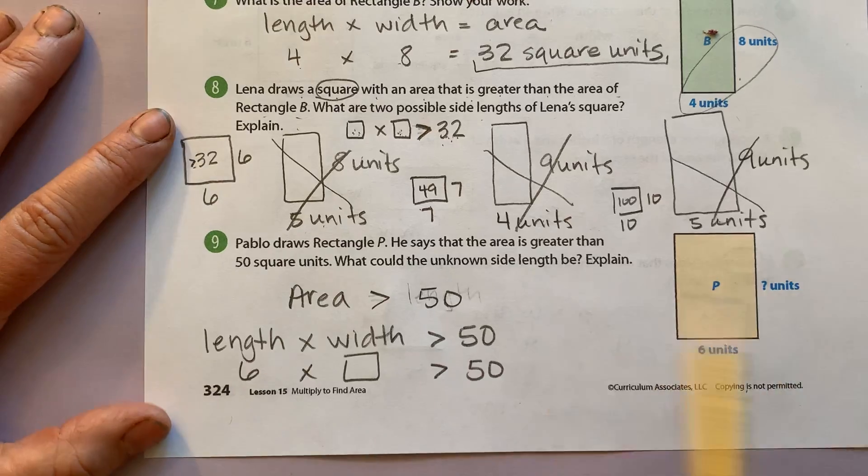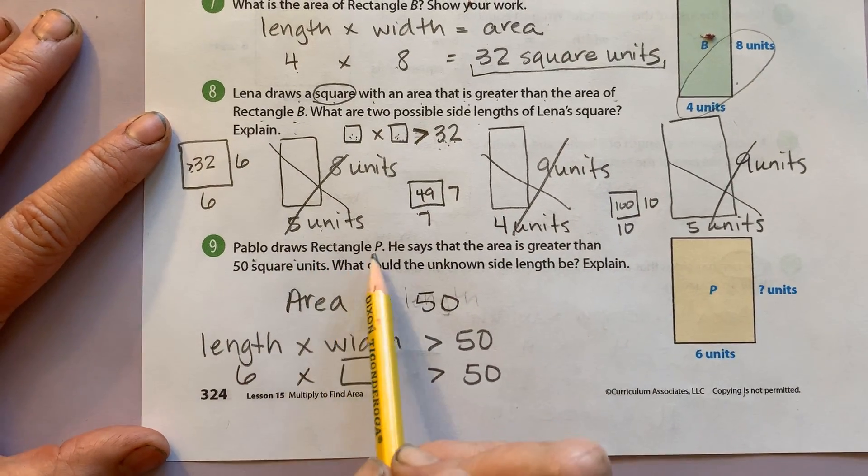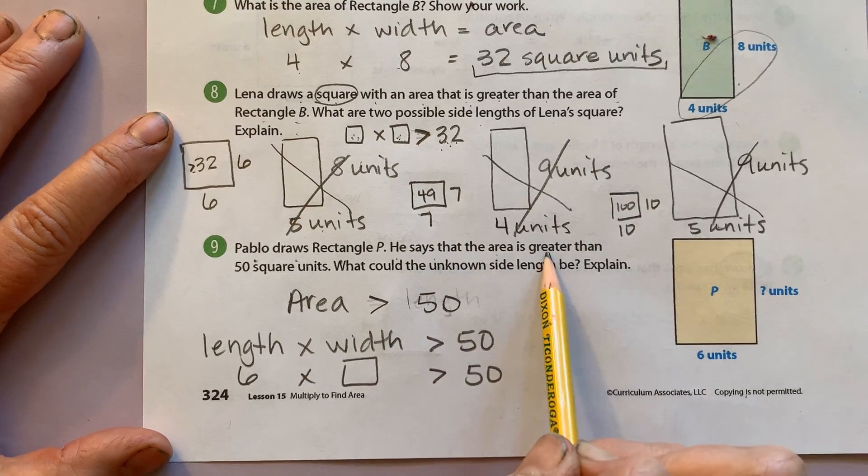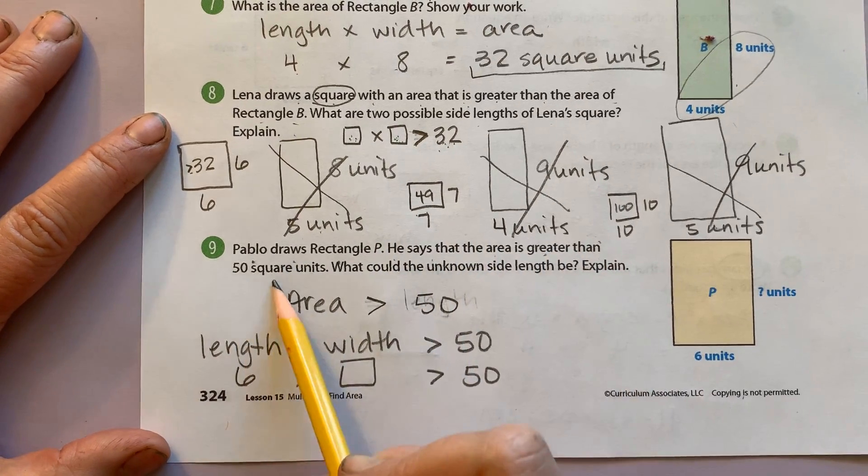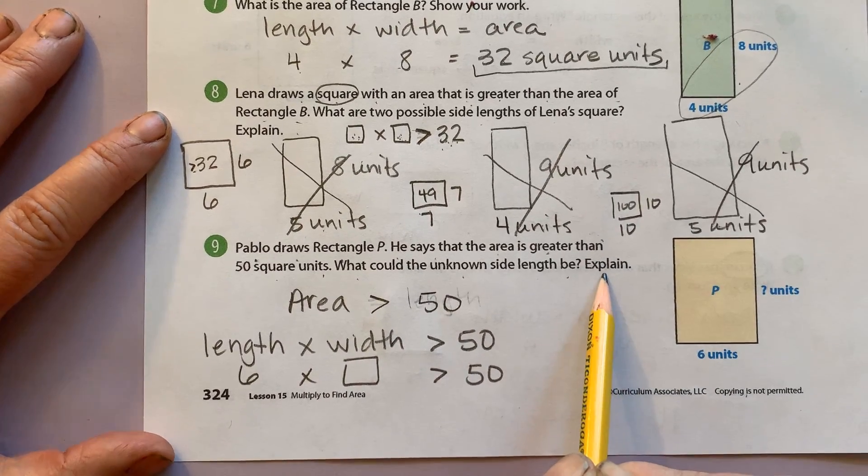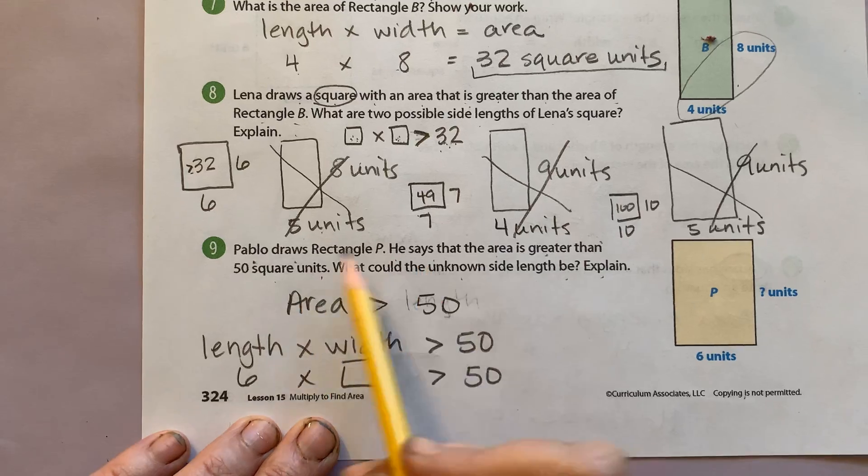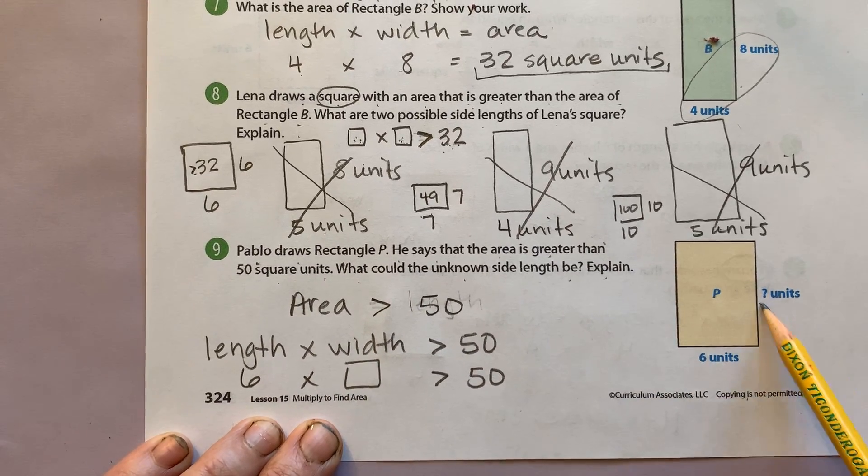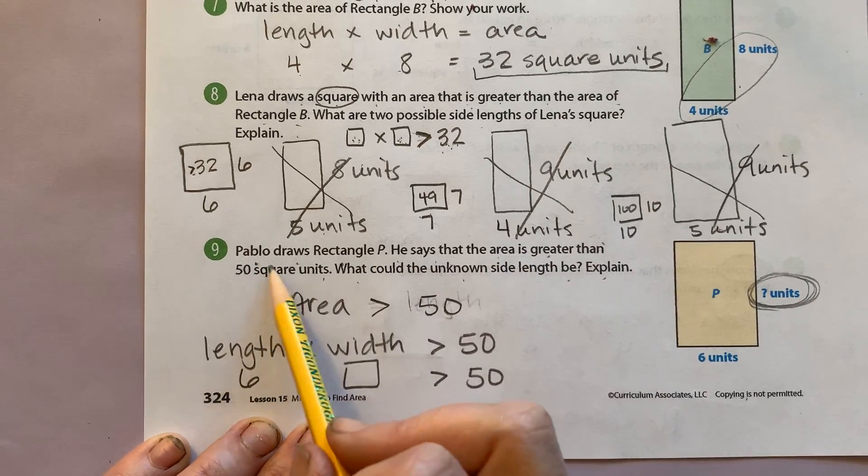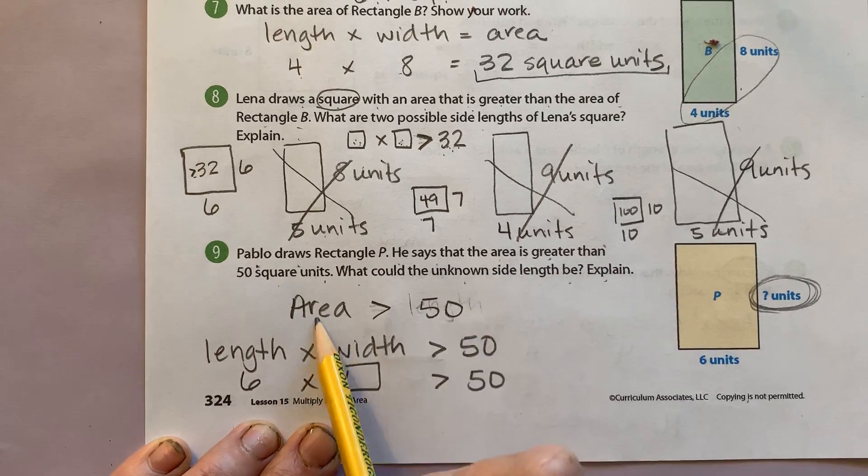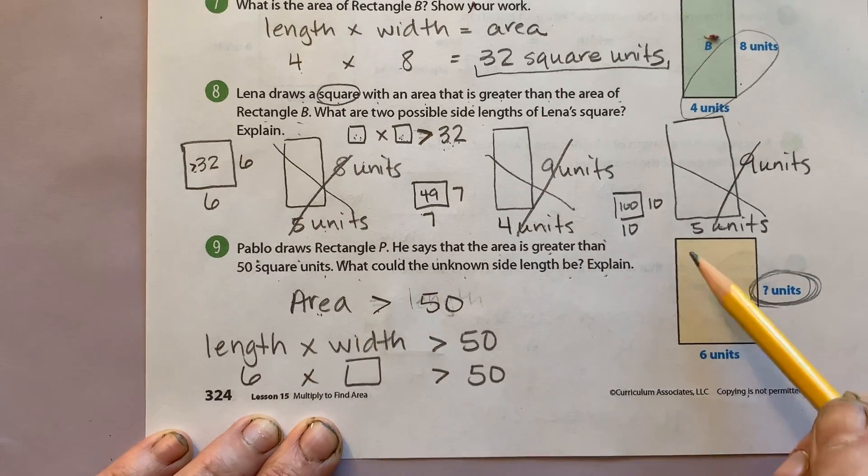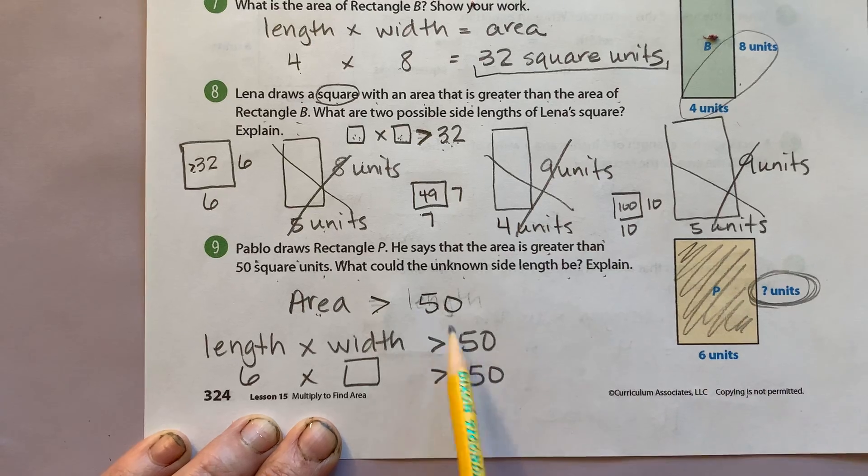Okay. Number nine. Pablo draws rectangle P. Here it is. He says that the area is greater than 50 square units. What could the unknown side length be? Explain. So I had to really study the picture and I noticed I don't know the width. I also looked at the problem again and he told me that the area is greater than 50. The area, this amount of space, is larger than 50.